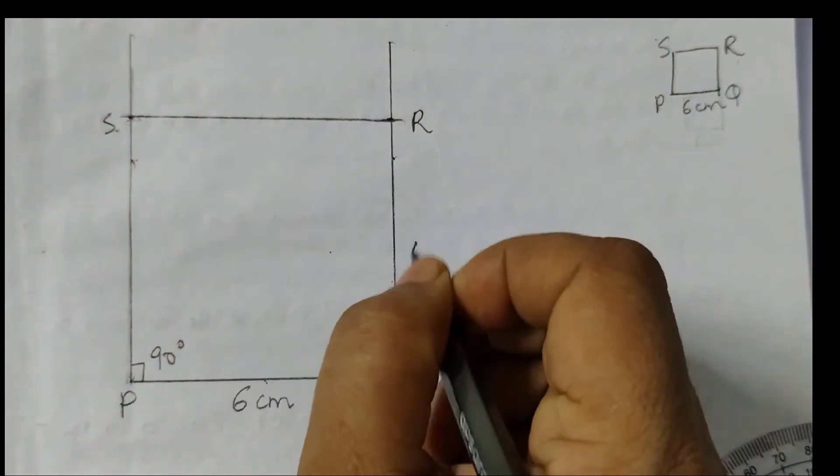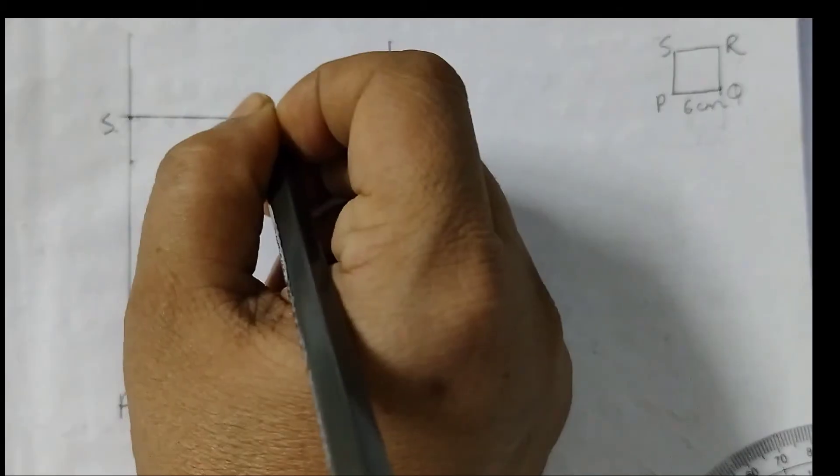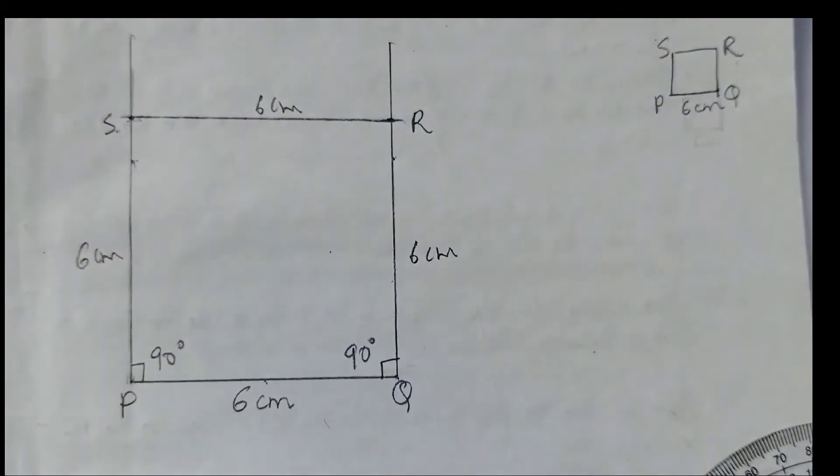So now our square is ready. The square is PQRS and all the sides are of equal length because that's a square. Right?